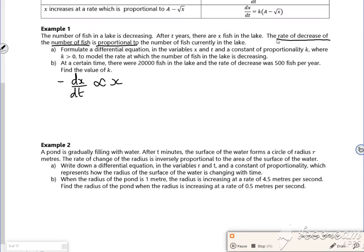Now I'm going to add a constant of proportionality. I'll move the minus on the other side as well. So I've got dx/dt equals minus kx. Now I've formulated it.